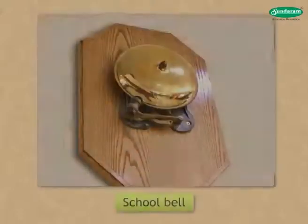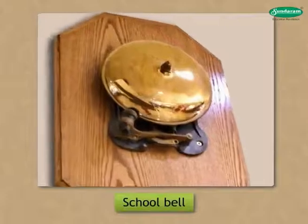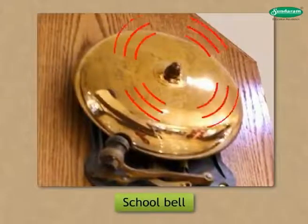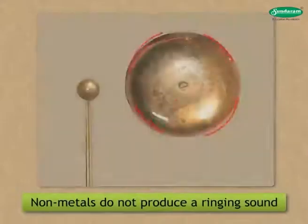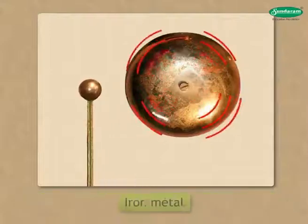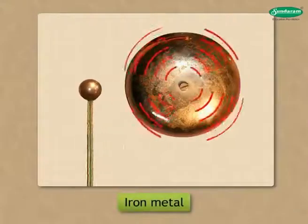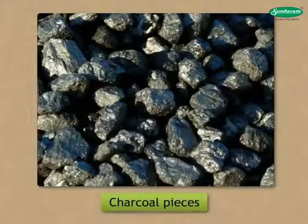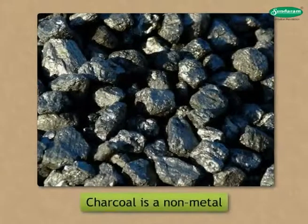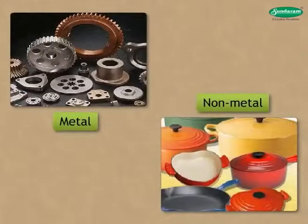Metals produce a ringing sound whereas non-metals do not. A bell made of iron metal produces a ringing sound with a gong that strikes it. On the other hand, when charcoal pieces are struck with each other, no ringing sound is produced, as charcoal is a non-metal. By now we have studied the physical properties of metals and non-metals. Now we shall learn a few chemical properties of metals.